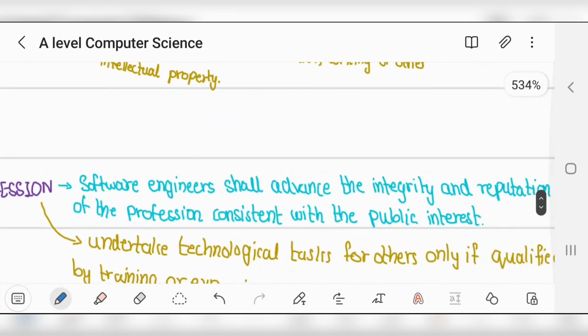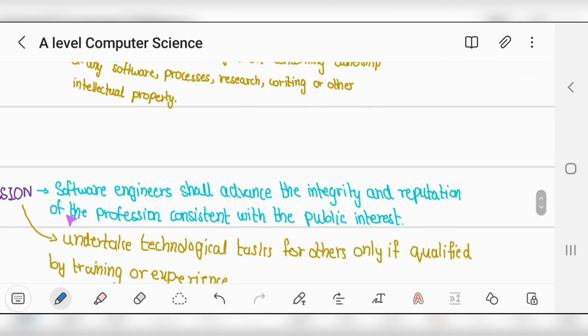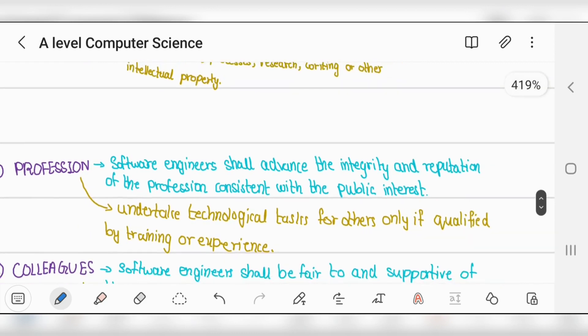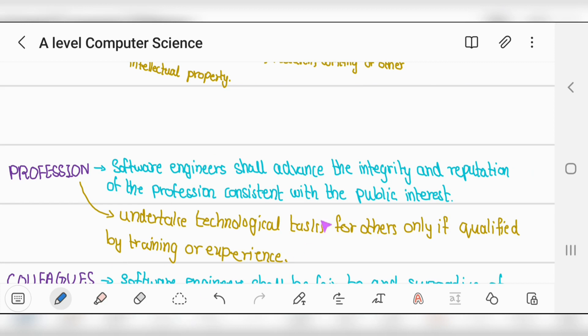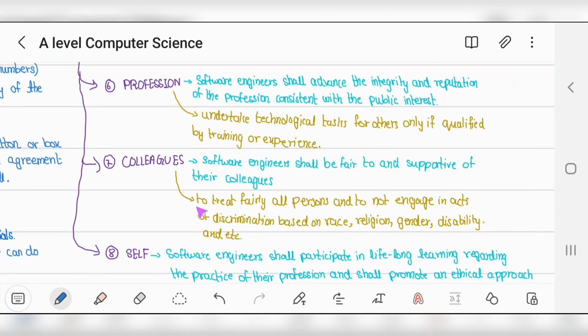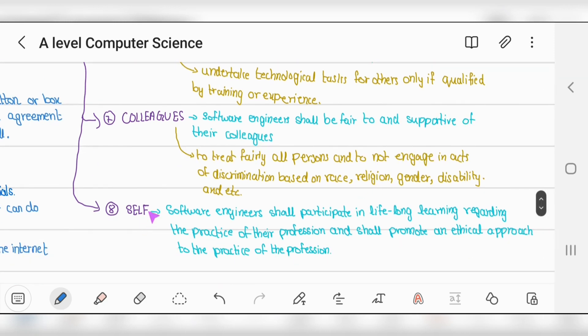Number six, profession: software engineers shall advance the integrity and reputation of the profession, undertaking technological tasks only if qualified by training or experience. Number seven, colleagues: be fair and supportive, treat all persons fairly, and don't engage in discrimination based on race, religion, gender, disability, etc.